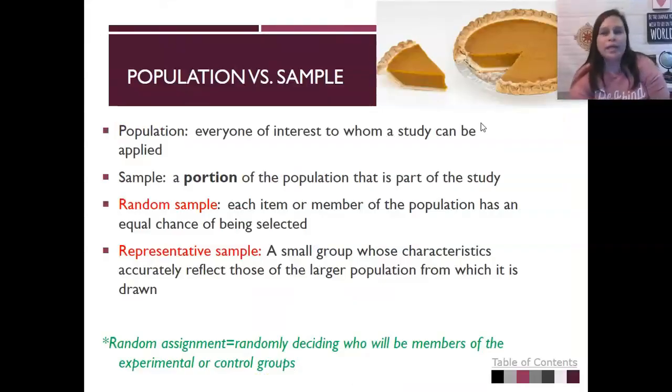Where do we get the people who are going to be in our research? This applies not just to experiments, but also if we're doing a naturalistic observation, a case study, or a survey. The population is everyone of interest to whom a study could be applied. Let's say we want to find out what are high school students' views about going on to a four-year college. Our potential population is every high school student in Texas or every high school student in America. In reality, we don't want to study that many people. It would be too big of a study. So we just want to study a sample, a portion of the population that is part of the study. We could say our sample is going to come from the high school or from Ellis County.